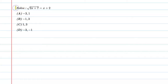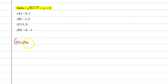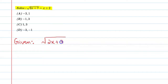Hello students, let's solve this question. Solve under root 2x plus 7 equal to x plus 2. So let's start this question. First of all, we will write given. It is under root 2x plus 7 equal to x plus 2.